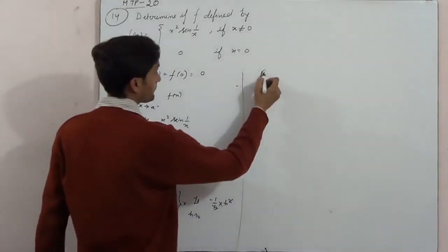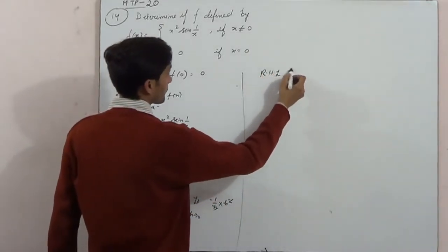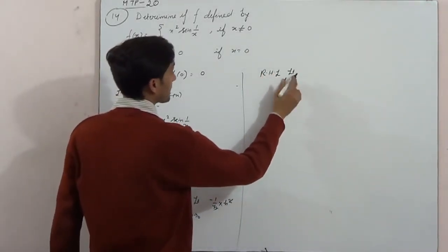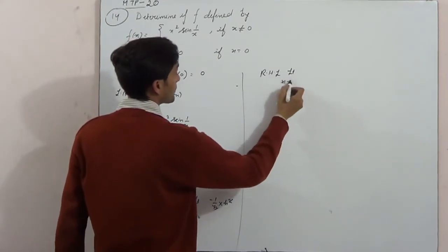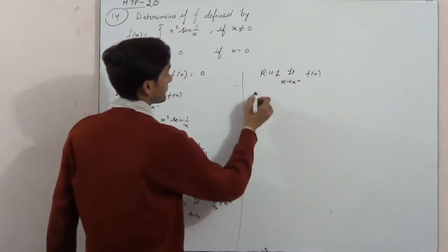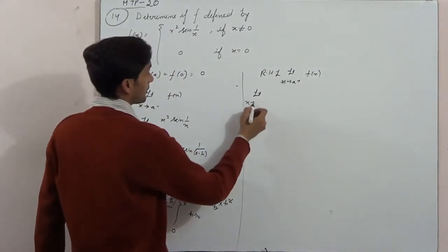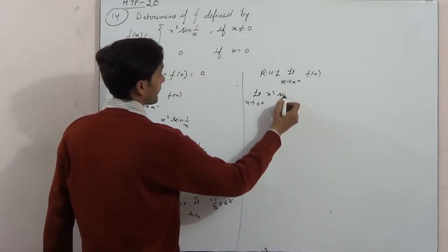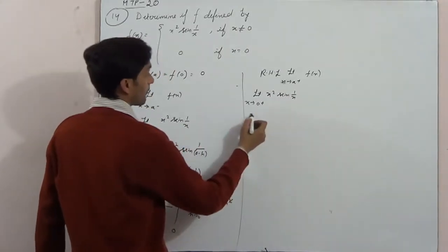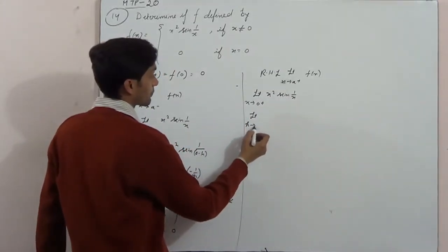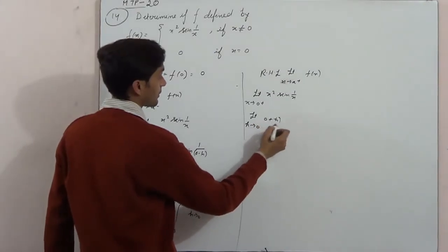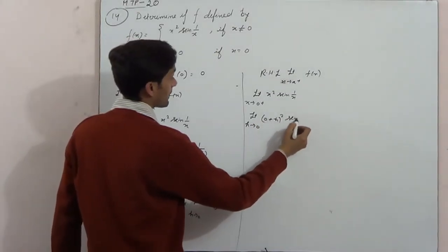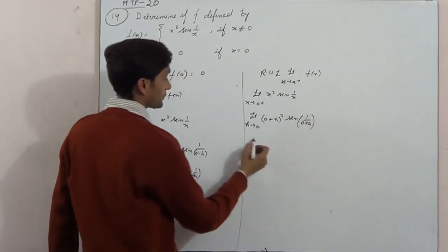Now right hand limit. Limit x tends to 0 positive, 0 plus h whole square, sin 0 plus h.